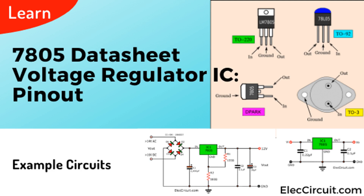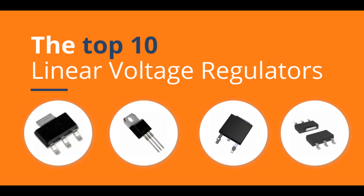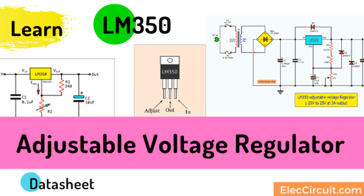Here's how a voltage regulator IC typically functions. The reference voltage in a voltage regulator IC is a stable and precisely controlled voltage generated internally within the IC. This reference voltage serves as a benchmark against which the output voltage is compared. It is typically designed to be highly accurate and stable over various operating conditions such as temperature, load variations, and input voltage fluctuations.